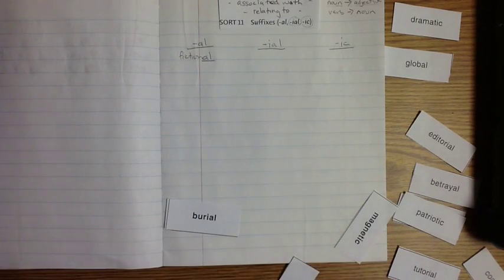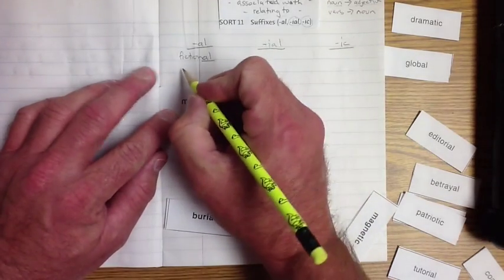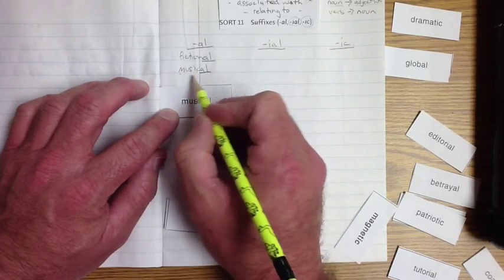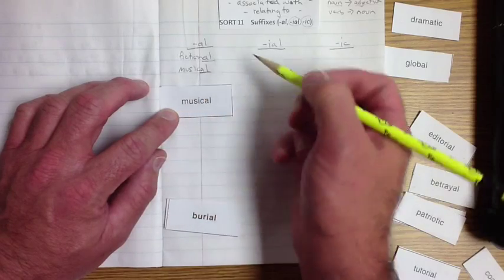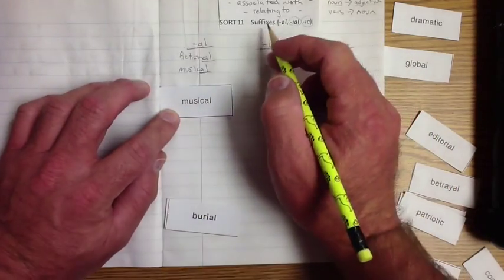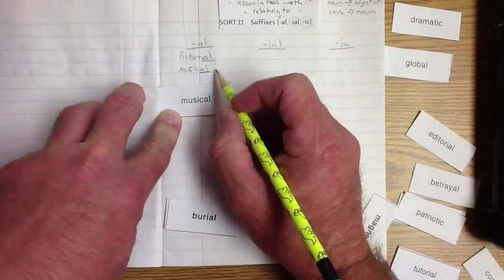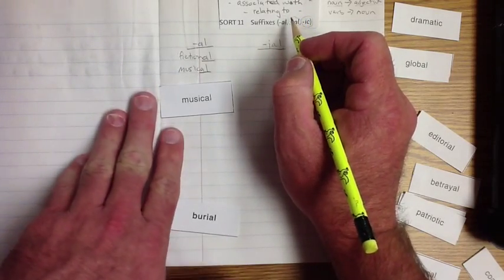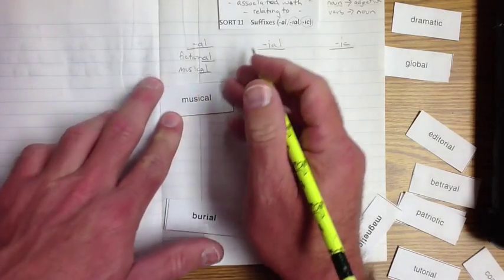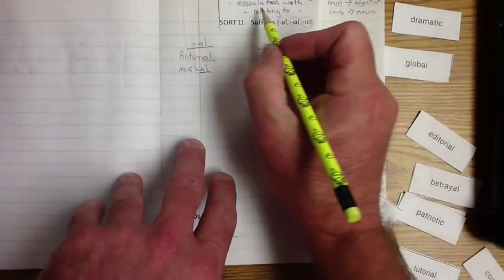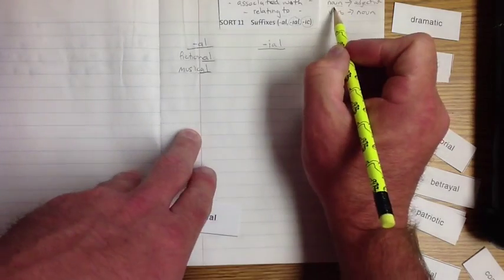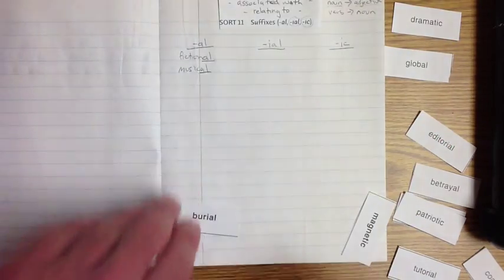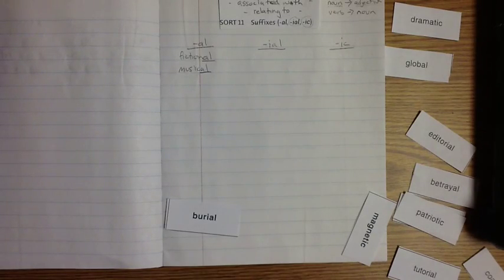Now let's go to another one, musical. Music is the base word, exactly. When you're a musical person, you are relating to music. You're associated with music. I am a musical person means I am associated with music. I change it from a noun, which is music, to an adjective by explaining that I am associated with music. Isn't that interesting?